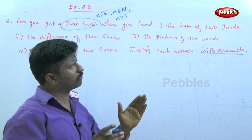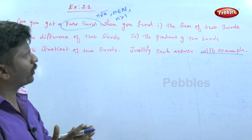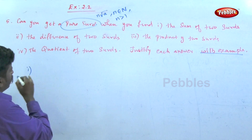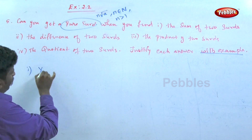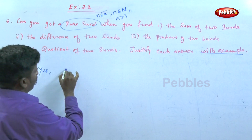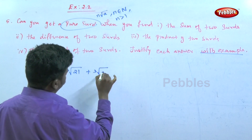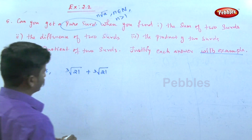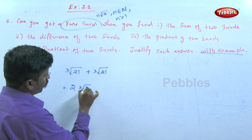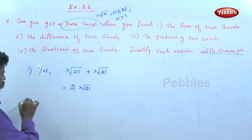The sum of two surds: when you add two surds, do you get a surd? For example, the cube root of 21 plus the cube root of 21 equals 2 times the cube root of 21. This answer is also a surd number.